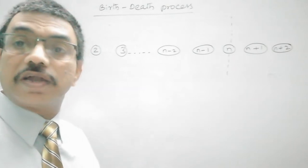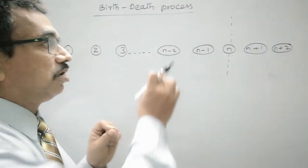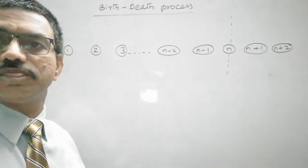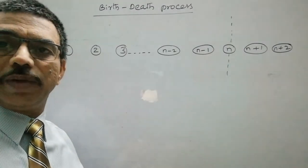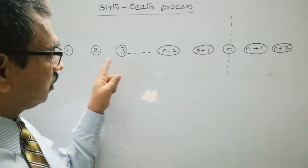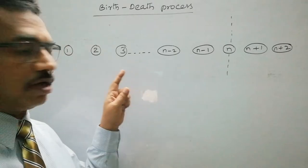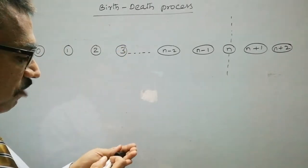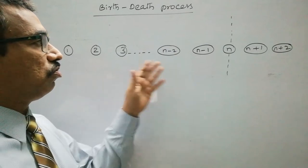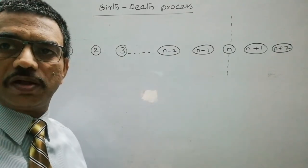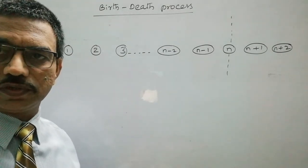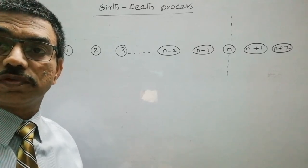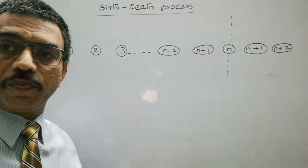The time interval between arrival of any two customers is not a constant — it varies. Similarly, the service time required for customers is different depending on the type of service they get, so it is also a random variable and follows some probability distribution.